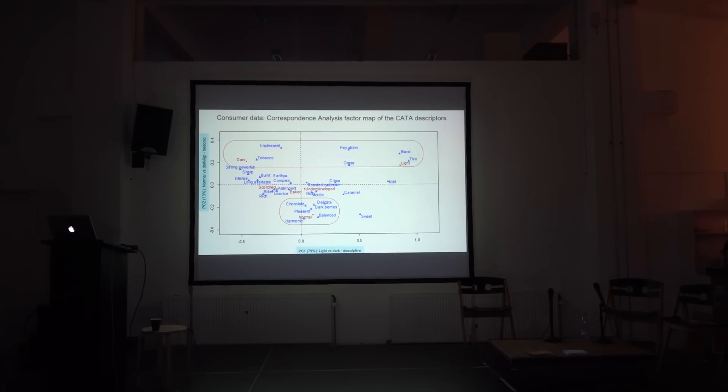And here you can see on the consumer data you can also see that by far the biggest effect was the difference between light and dark. These percentages says something: the x-axis describes 80% of the variation of the samples and the y-axis only describes 30%. So it seems like dark and light drives the biggest difference between these samples, which is probably not a surprise. But you can still see here, the normal, even for the consumer data, the normal is clustering together with the harmonic, balanced, pleasant.